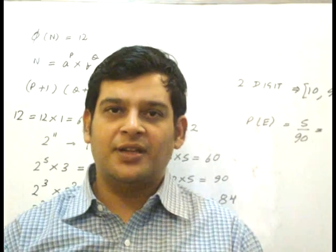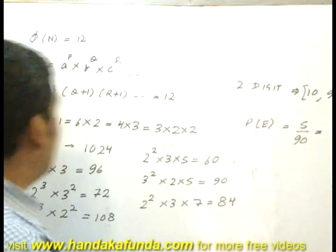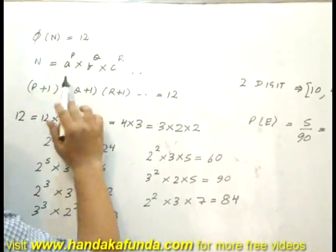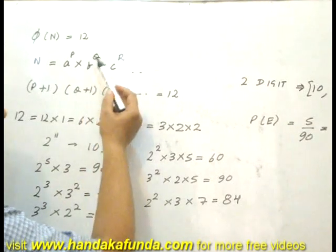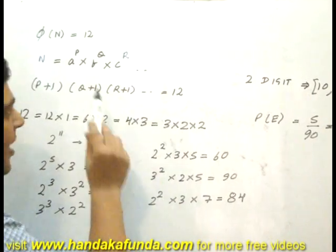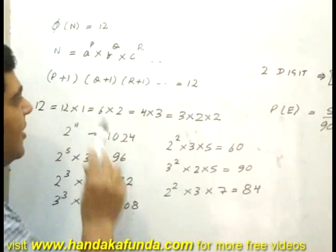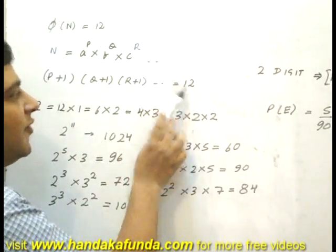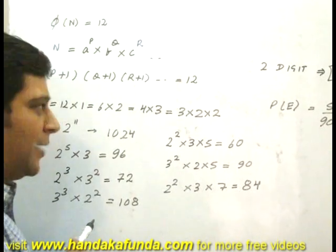My number n has exactly 12 factors. If a number n is written as a to the power p into b to the power q into c to the power r, where a, b, c are primes, its number of factors is given by p plus 1 into q plus 1 into r plus 1, which is given as 12.